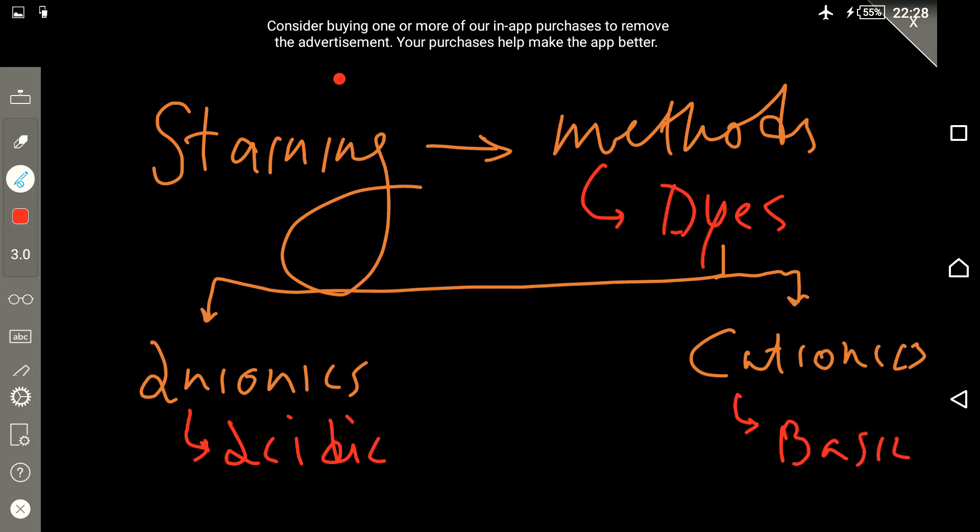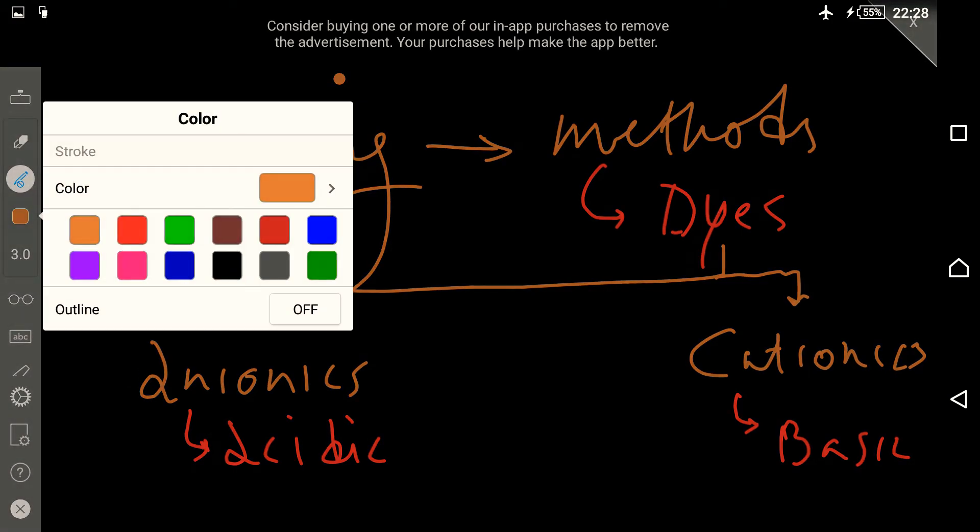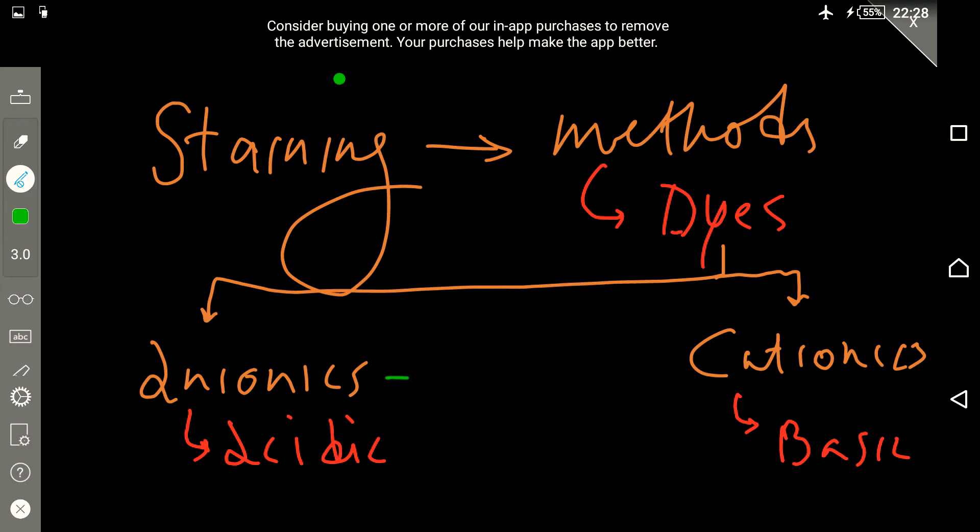The anionics usually interact and dye the acidic structures of the tissue, and the cationics usually dye the basic structures. Since anionics have the negative charge and acidics have positive charge, that's why they bind. Here it has positive charge and interacts with the negative charge, forming the bond. Thus the dye is introduced into the portions of tissue and the tissue gets the stain and shows a specific color.